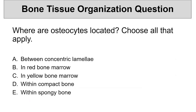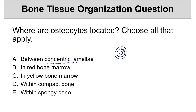Now we've made it to our questions. Where are osteocytes located? Choose all parts of a bone that apply. The first option is between concentric lamellae. Concentric lamellae are the plates of bone that form an osteon, and in between each we'll find osteocytes. So this is one correct answer — we will find osteocytes between concentric lamellae.